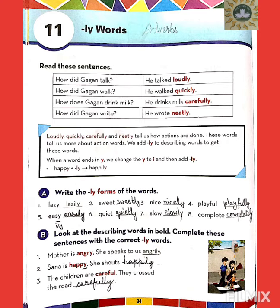For example, lazily — L-A-Z-I-L-Y. Sweet: S-W-E-E-T, and after T we add L-Y, so sweetly: S-W-E-E-T-L-Y. Nice: N-I-C-E, after E we add L-Y, so nicely: N-I-C-E-L-Y.